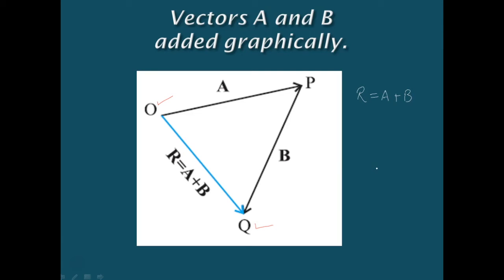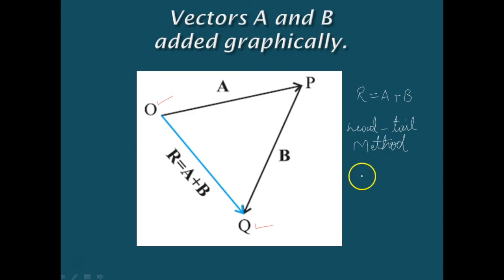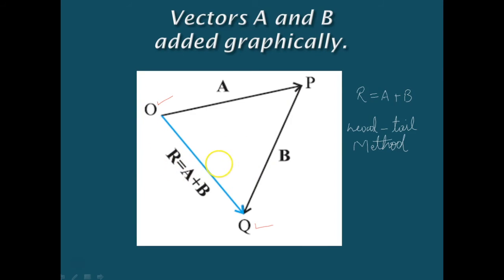Since in this procedure of vector addition vectors are arranged head to tail, this graphical method is also called the head-to-tail method. The two vectors and their resultant form three sides of a triangle, so this method is also known as the triangle method of vector addition. Vectors A and B form two sides of the triangle and the resultant vector OQ forms the third side.